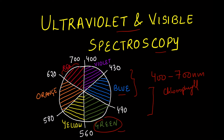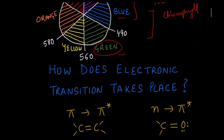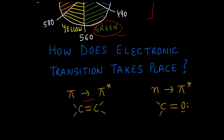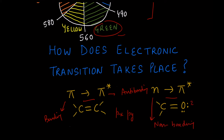Now how do these transitions take place? These electronic transitions are pi to pi star and n to pi star transitions. Pi is the bonding orbital and pi star is the anti-bonding orbital, and both are formed by the overlap of atomic orbitals px and py. N represents non-bonding electrons — the lone pair of electrons, such as the lone pairs on oxygen.